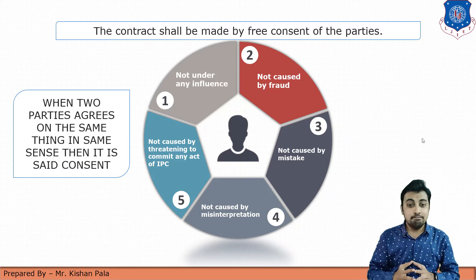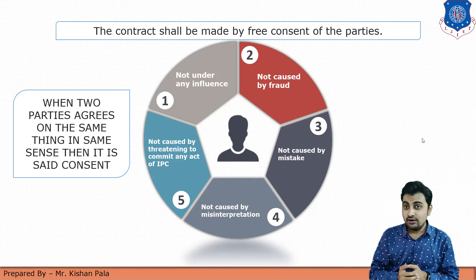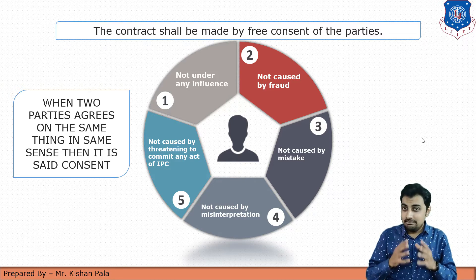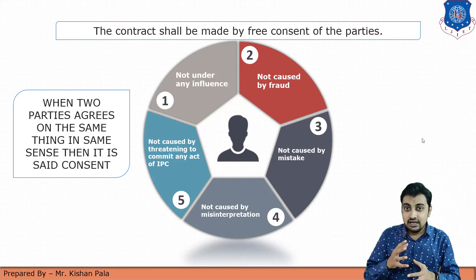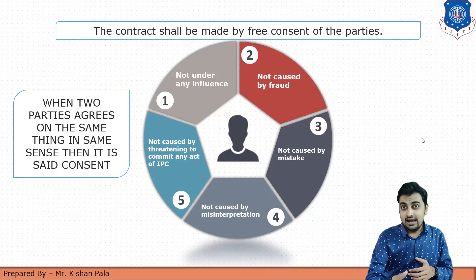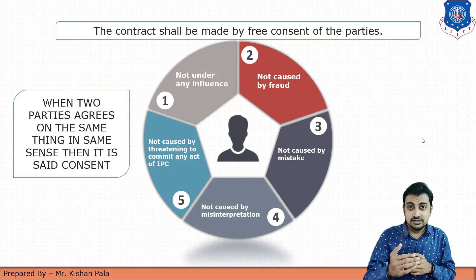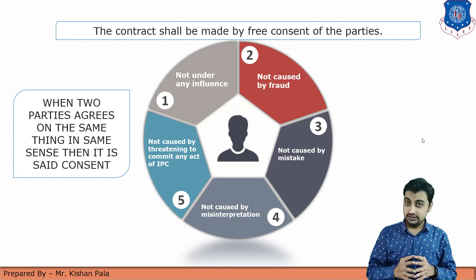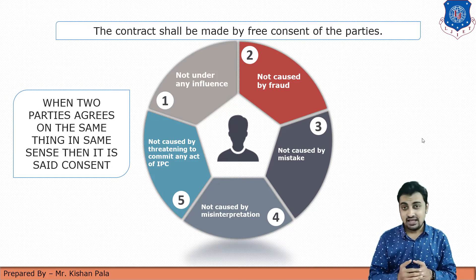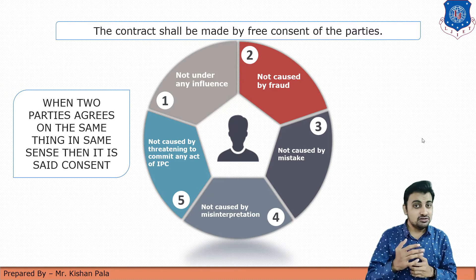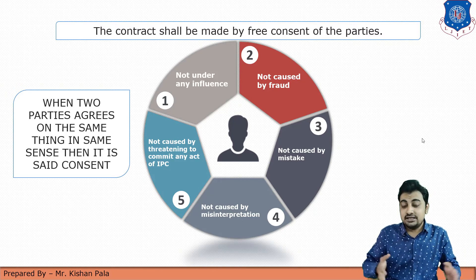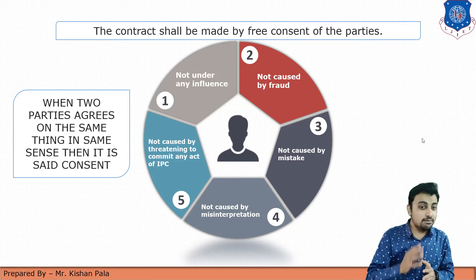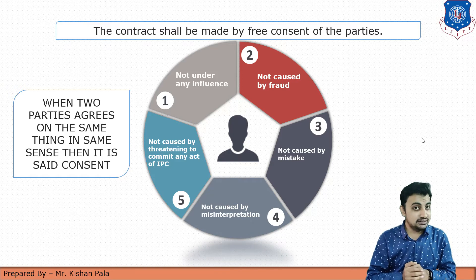The fourth aspect is that consent must not be caused by misinterpretation between the parties. When the client makes an offer and the contractor accepts, if the contractor misinterprets the material details mentioned in the tender and fills a lower rate, misinterpretation has occurred, causing problems for both parties. The contract should be free from misinterpretation. The last aspect is that it must not be caused by threatening to commit any act under IPC — the Indian Penal Code.